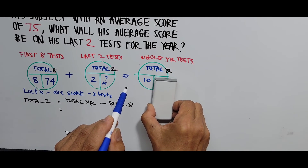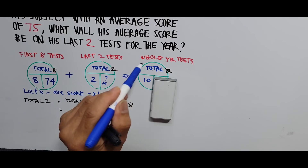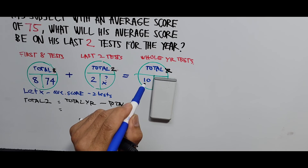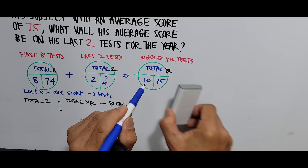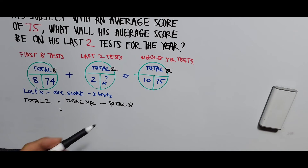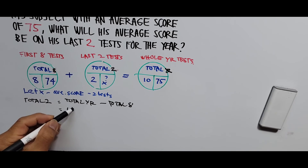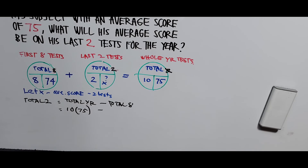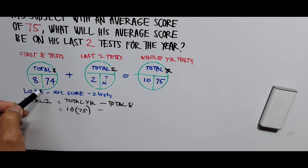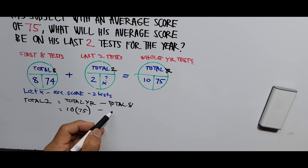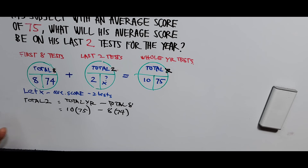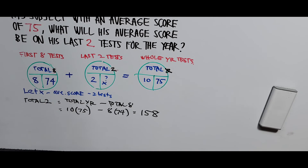If you want to get the average, cover that up — you divide the total by the number of things. So the total for the year is 10 times 75, and the total for the first eight tests is 8 times 74. So the total for the last two tests is 10×75 minus 8×74, which equals 750 minus 592 — that gives us 158.